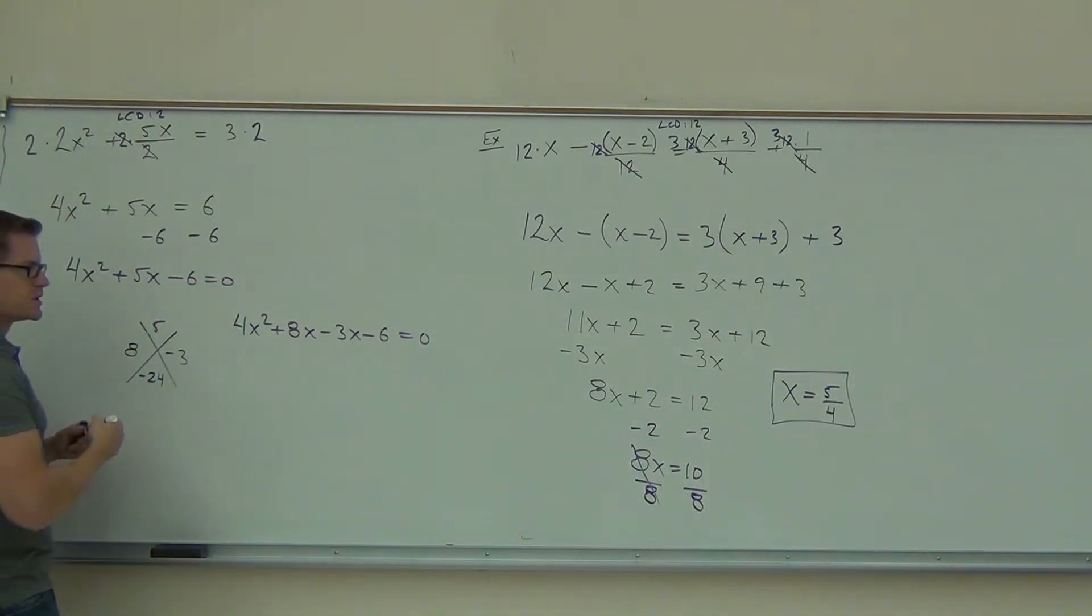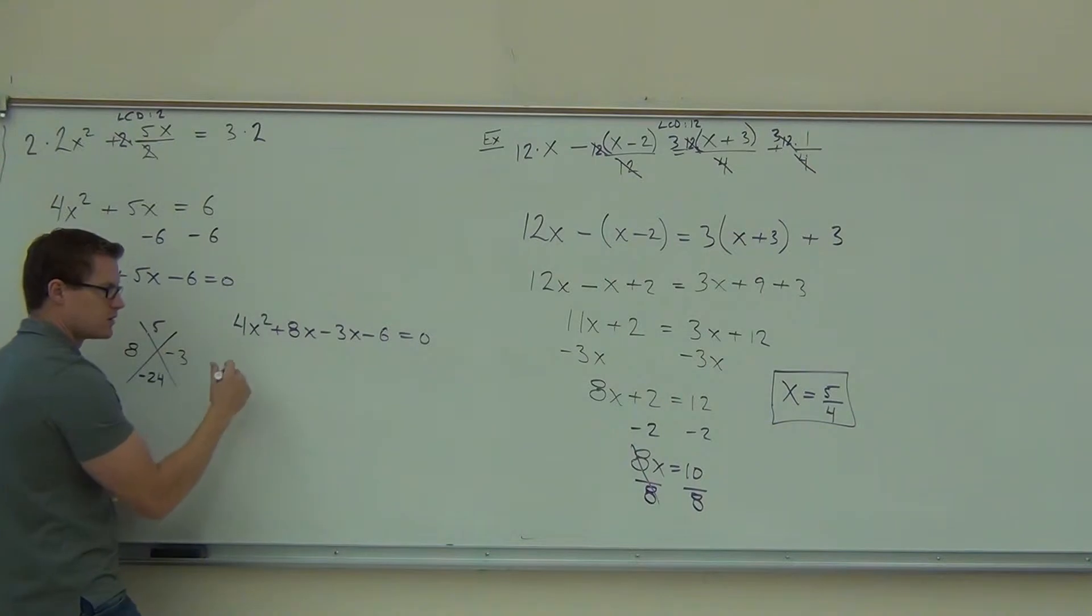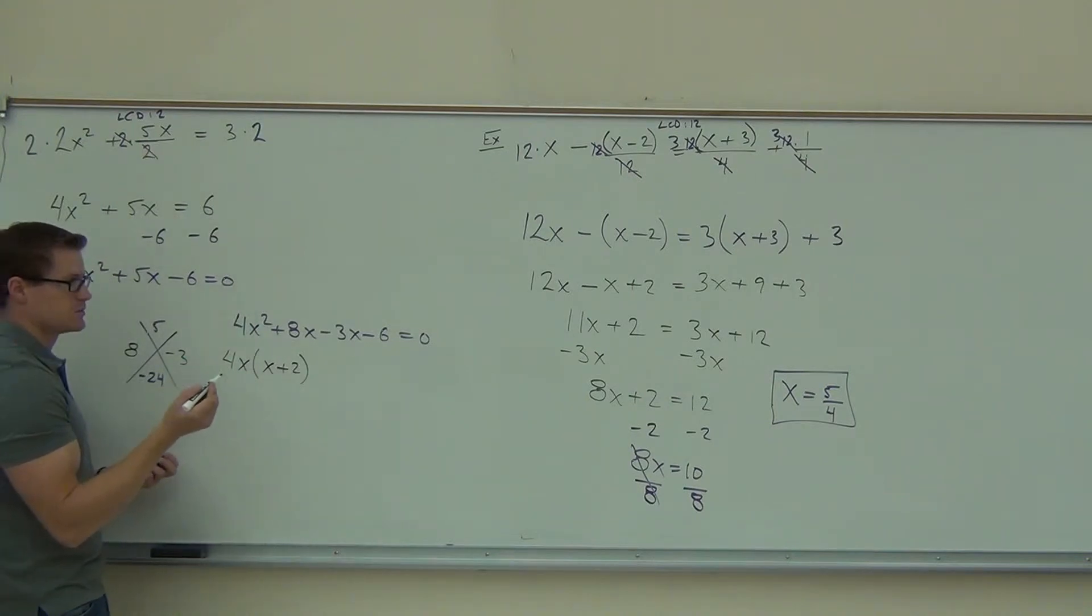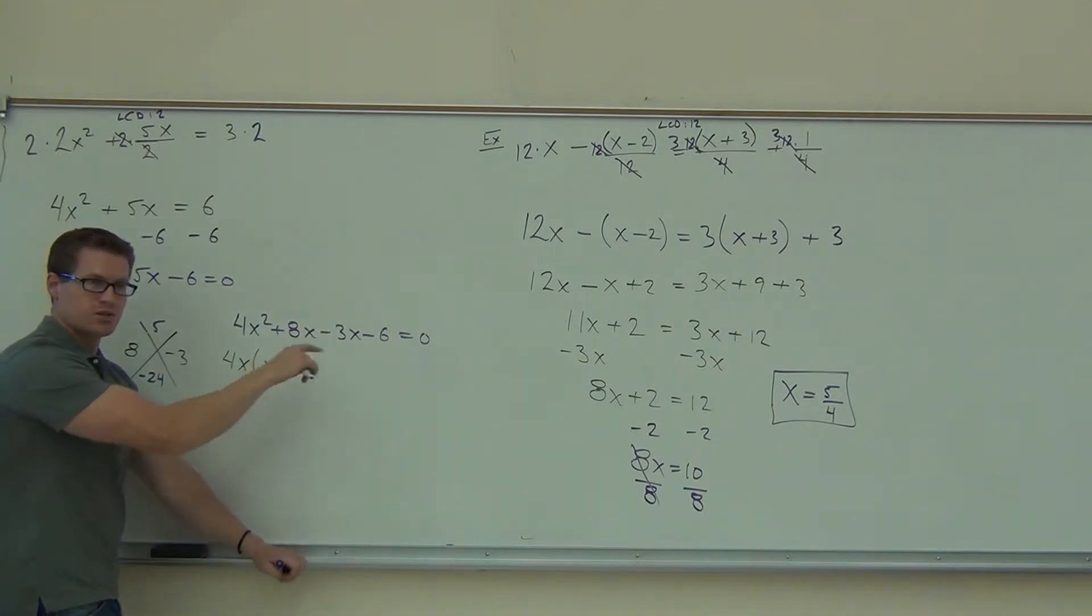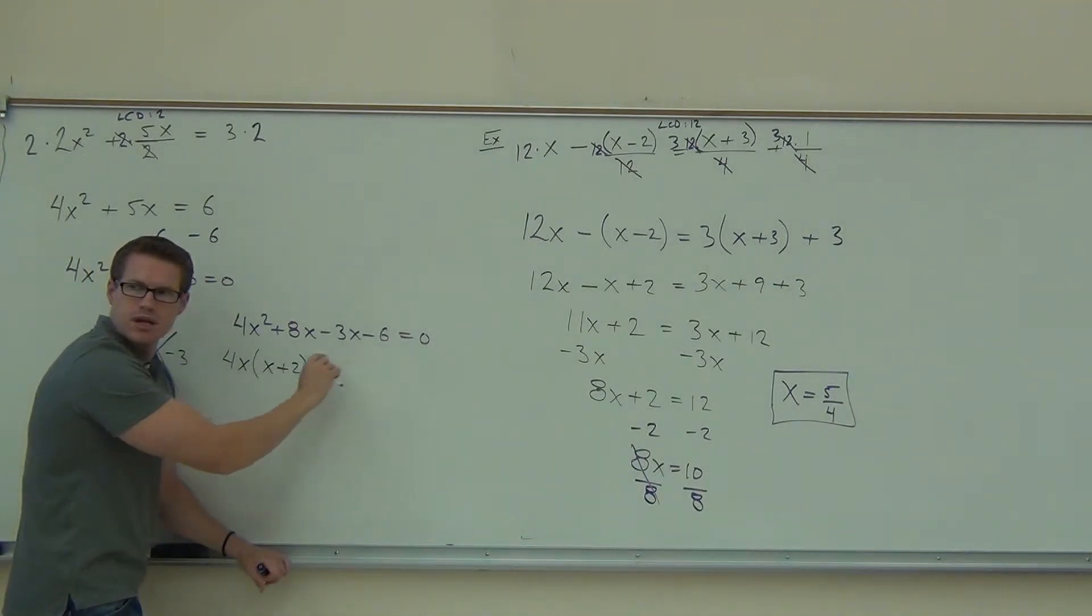We do this because we can factor by grouping now. We'll factor out what from here? 4x. Perfect. And we will get, looks like x plus 2 to me. Now, can you tell me - and this is the reason why I wrote it in this order - what do you factor out of these two terms? A positive or a negative? Negative.